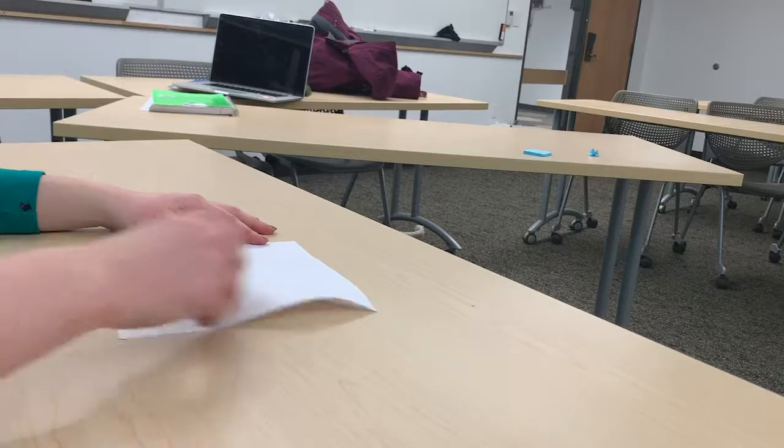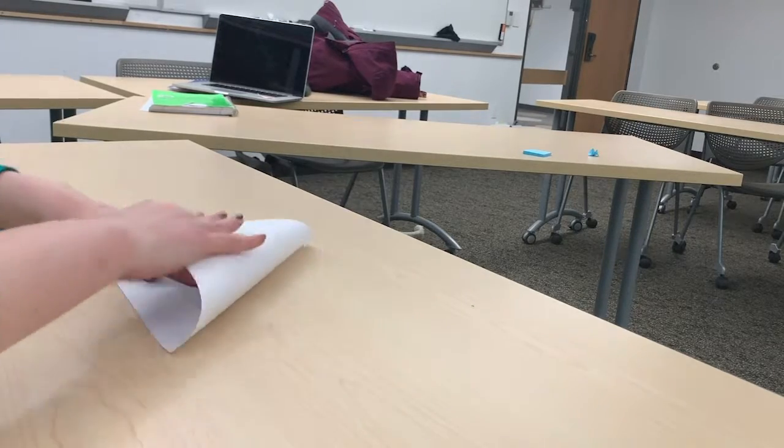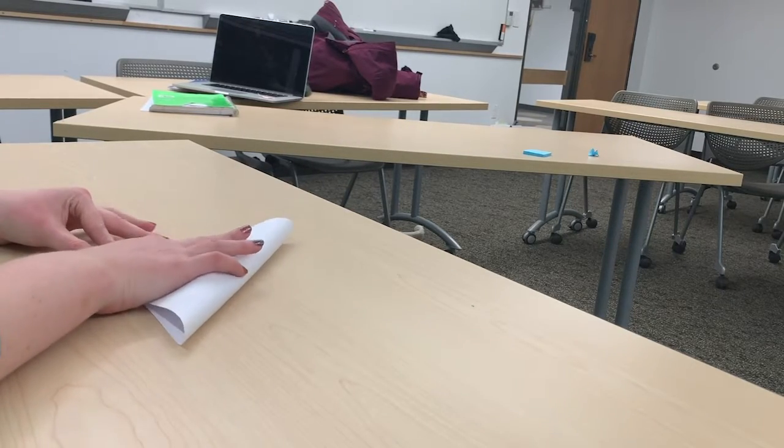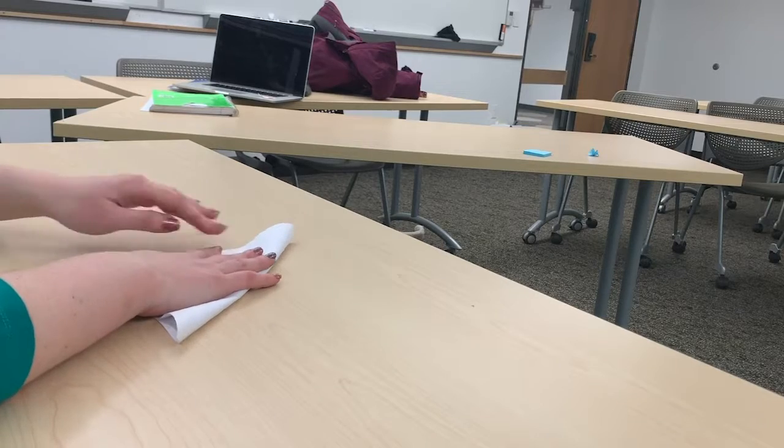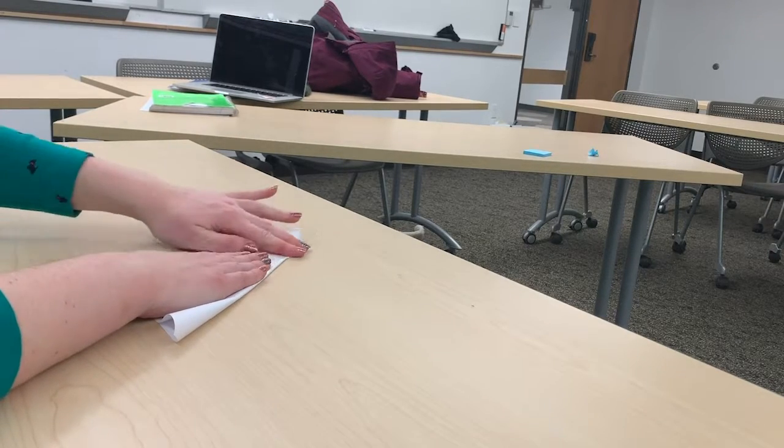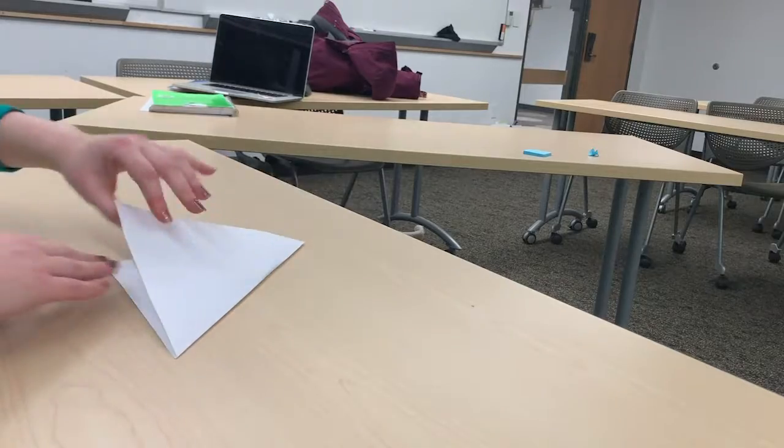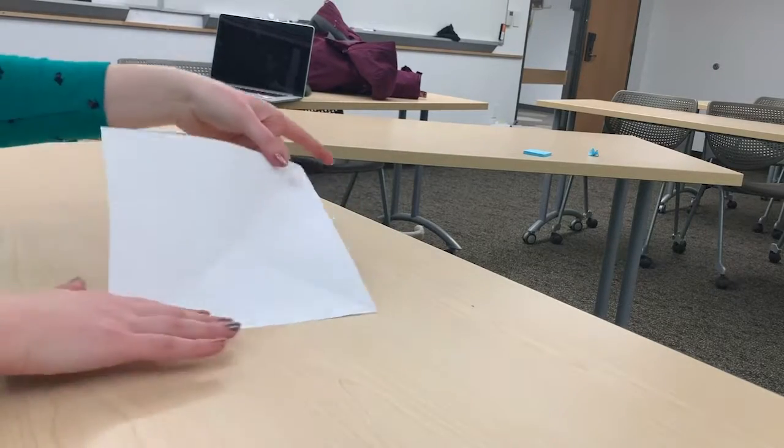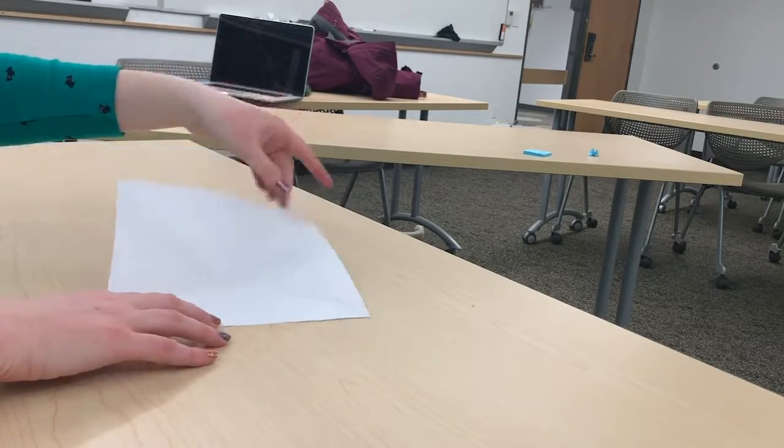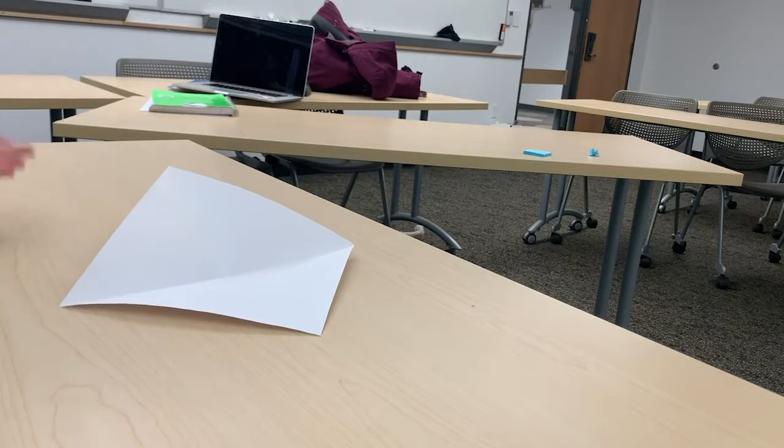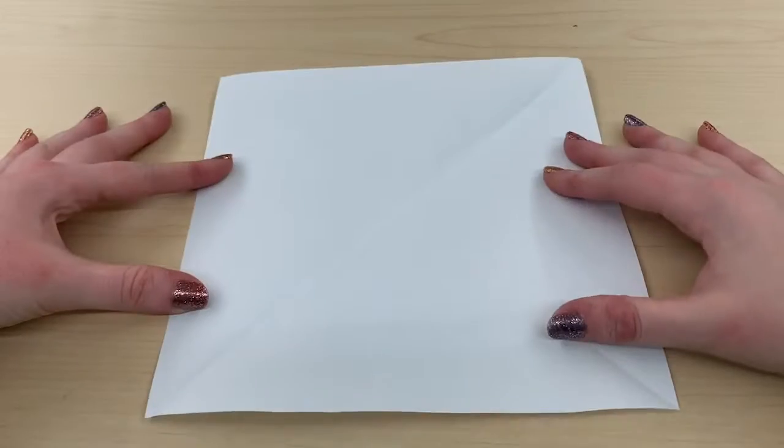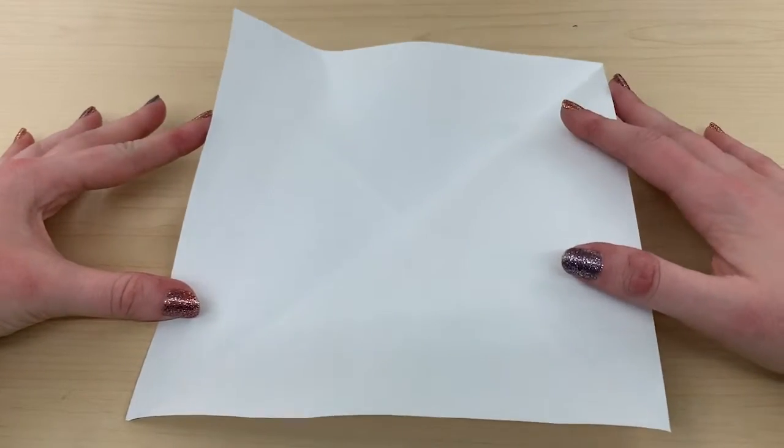And then the next thing you're going to want to do is fold your square in half in the opposite direction, matching up all of your corners so that you can form another crease. And when that's done, you're going to have a nice X going through your paper. And those creases are going to act as your guides for the rest of the craft.